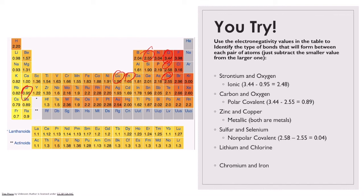Then we've got lithium, which is right here, and chlorine, which is right here — those are on opposite ends of the periodic table, one's a metal and one's a non-metal. Their electronegativity difference is 2.18, so that's definitely going to be an ionic bond. And then chromium and iron — both metals, so that is going to be a metallic bond. I hope this video was helpful. If you have any questions, please write those in your notebooks and be ready to ask during class.